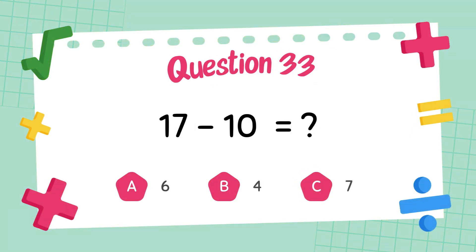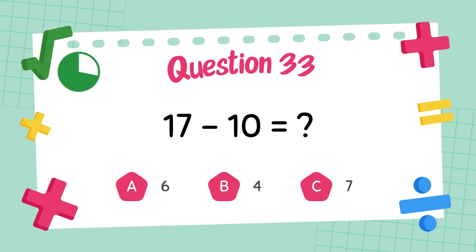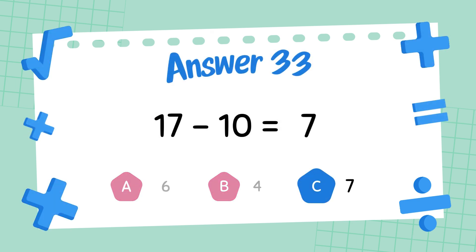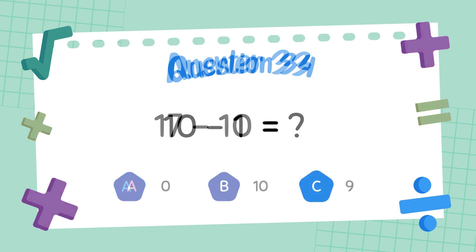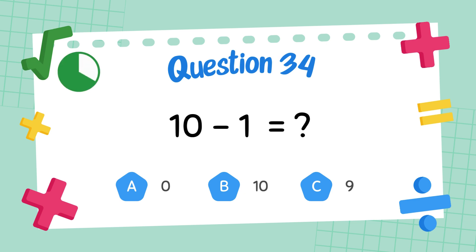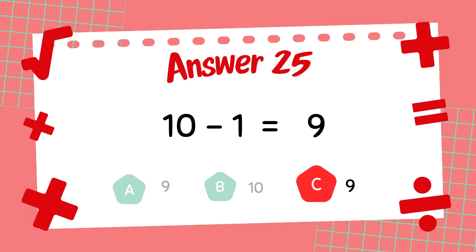What is 17 minus 10? The answer is 7. What is 10 minus 1? The answer is 9.